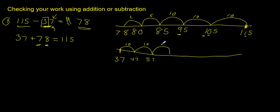Another set of 10 gives us 57, another set of 10 gives us 67, another set of 10 gives us 77, another set of 10 gives us 87. That's 10, 20, 30, 40, 50, so I have to add 20 more. Another set of 10 gives us 97.